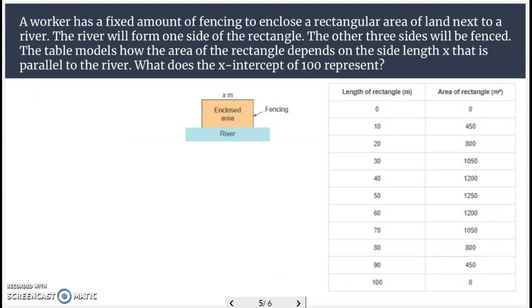All right, the next one we have a worker has a fixed amount of fencing to enclose a rectangular area of land next to the river. The river will form one side of the rectangle. The other three sides will be fenced. The table models how the area of the rectangle depends on the side length x that is parallel to the river. What does the x-intercept of 100 represent? It's down here at the bottom. And notice it's an x-intercept because the y-value is 0. Think of that first column as x, second column as y. And x is this length here.